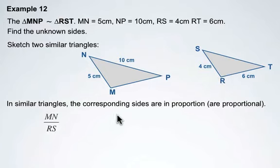So we can set up the following proportion: MN/RS = NP/ST = MP/RT. Side MN compared to side RS should equal the ratio when we compare NP to ST, which should equal the ratio when we compare MP to RT.